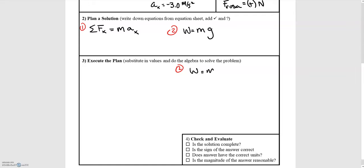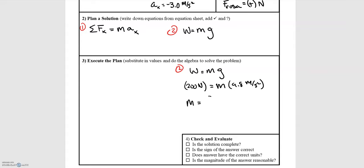We start by finding the mass of the box. Weight equals mass times acceleration due to gravity: 200 Newtons equals mass times 9.8 meters per second squared. Mass equals 200 Newtons — kilograms meters per second squared — divided by 9.8 meters per second squared. Canceling units, we're left with kilograms and a mass of 20.4 kilograms.